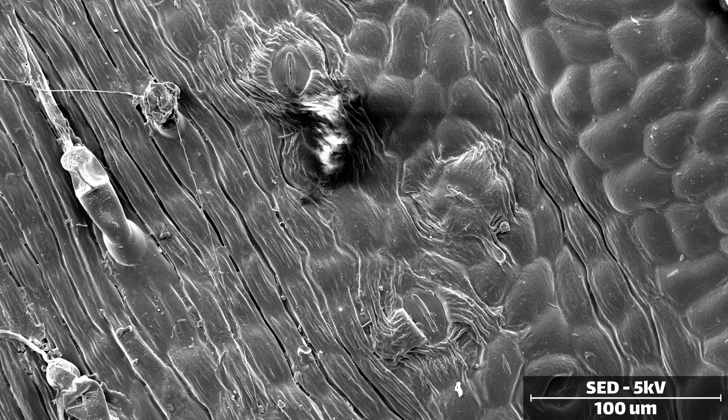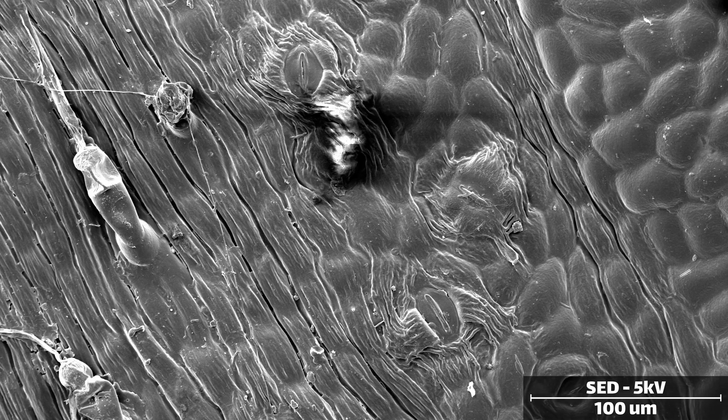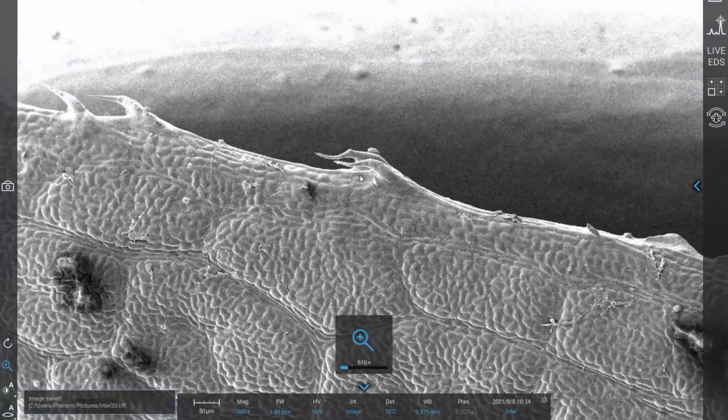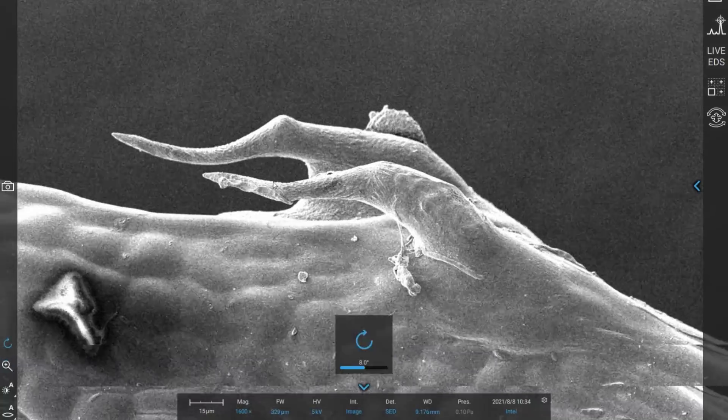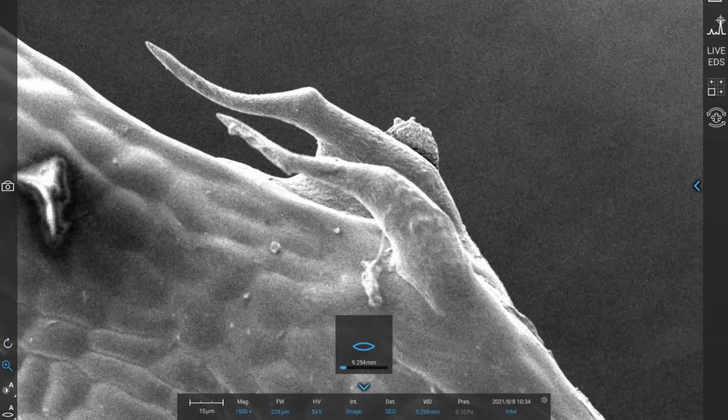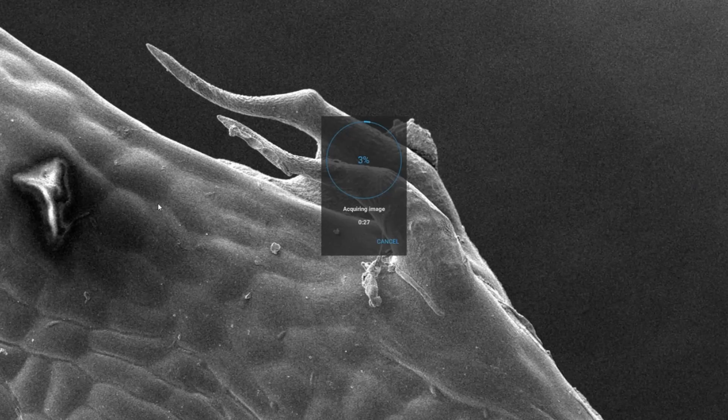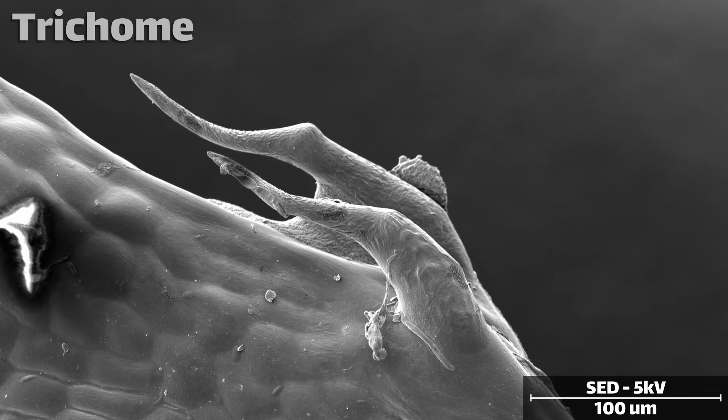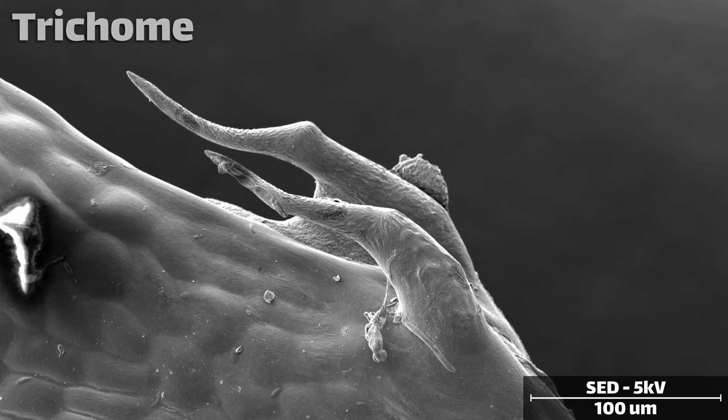Scattered around at intervals are small hairs called trichomes. Some trichomes secrete resins and substances which deter pests, while others help create a layer of stagnant air near the surface of the leaf to limit moisture loss. And some are just kind of pokey, to irritate wayward insects and encourage them to go elsewhere.